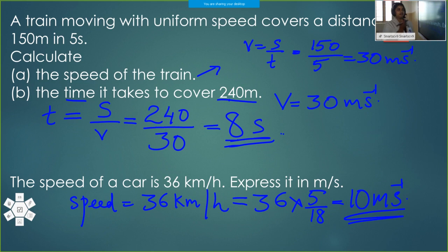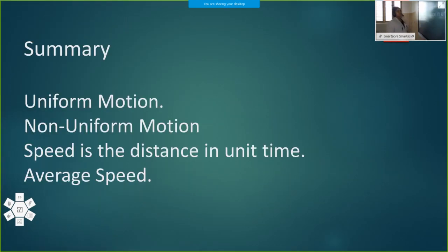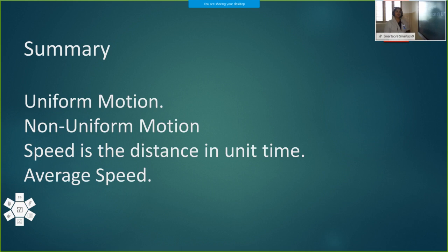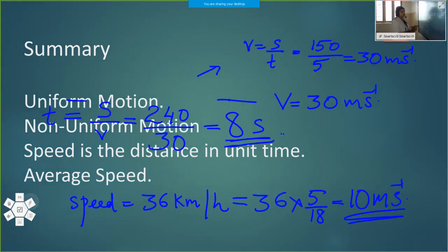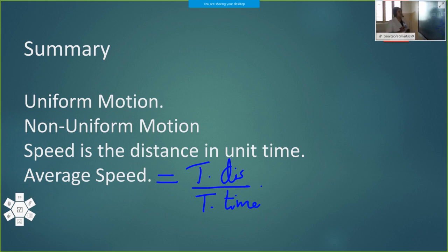We have studied uniform motion and non-uniform motion. Uniform speed and non-uniform speed follow the same definitions. Speed is distance traveled in unit time, and average speed equals total distance by total time. We can wind up this session.